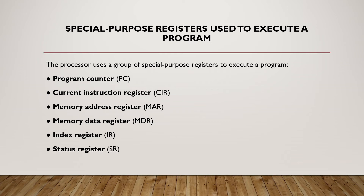Special purpose registers are used to execute a program. As seen in the typical diagram of a CPU, these are the different special registers used: the Program Counter, the Current Instruction Register, the Memory Address Register, the Memory Data Register, the Index Register, and the Status Register.